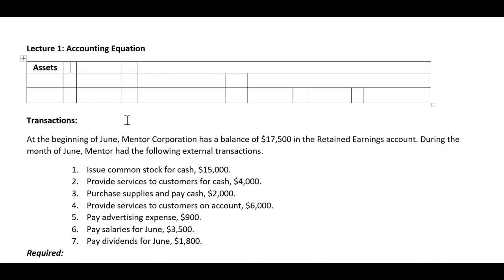The rest of the equation is assets equal liabilities. Liabilities are creditors' claims against the assets — things we owe, or the common word debt. But technically, we call that the creditors' claims.